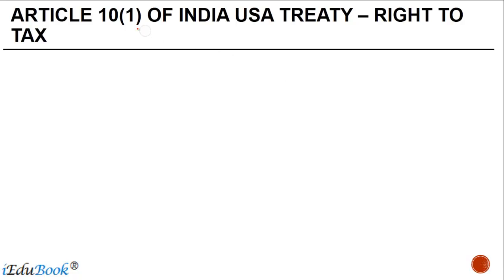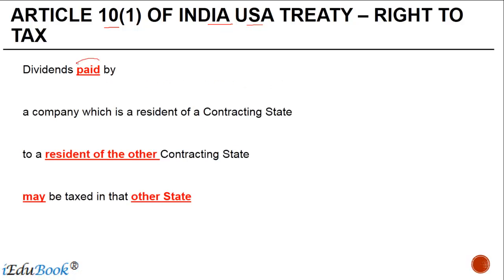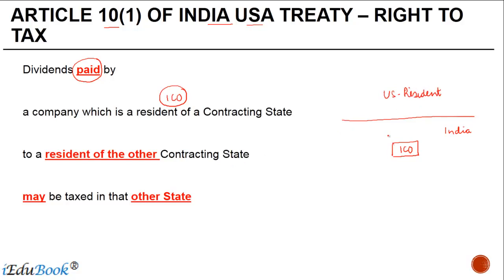Now let us come to the actual text of Article 10, and like in the previous cases, we are going to look at the India-USA treaty to see who has the right to tax dividends paid by a company which is a resident of a contracting state. So let's say we have an Indian company — this Indian company is a resident of India. Dividend paid by the Indian company to a US resident — the concept of resident has to be looked at as per Article 4.